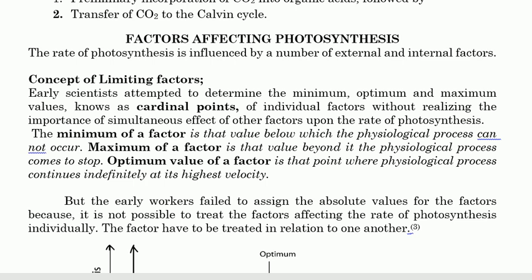Scientists initially would take light alone and set it at minimum, optimum, and maximum — the cardinal points for light. Then they would take temperature alone and set its cardinal points. They did not look at combining two or more factors together.